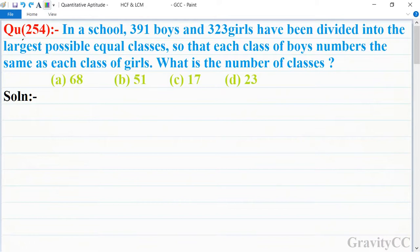Chapter HCF and LCM, question number 254. In a school, 391 boys and 323 girls have been divided into the largest possible equal classes, so that each class of boys numbers the same as each class of girls.